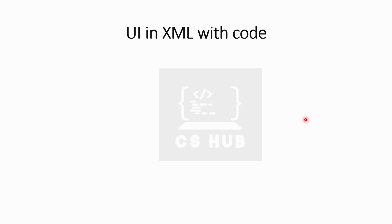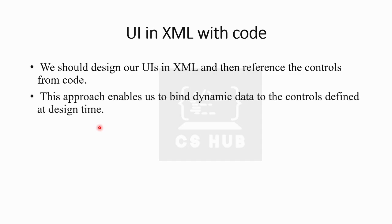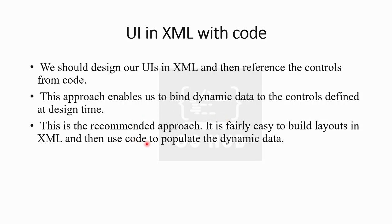UI in XML with code: you design the UI in XML, then reference the controls from code. This approach enables binding dynamic data to controls defined at design time. This is the recommended approach — it is fairly easy to build layouts in XML and then use code to populate dynamic data.